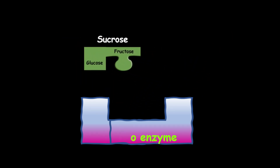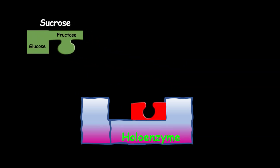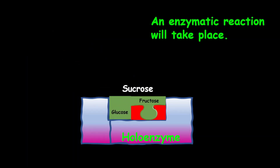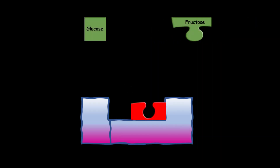However, with a combination of a coenzyme or a cofactor, the substrate can be able to fit into the induced shape of the holoenzyme. Therefore, an enzymatic reaction will take place and you will get the products after the reaction. In this case, it will be glucose and fructose.